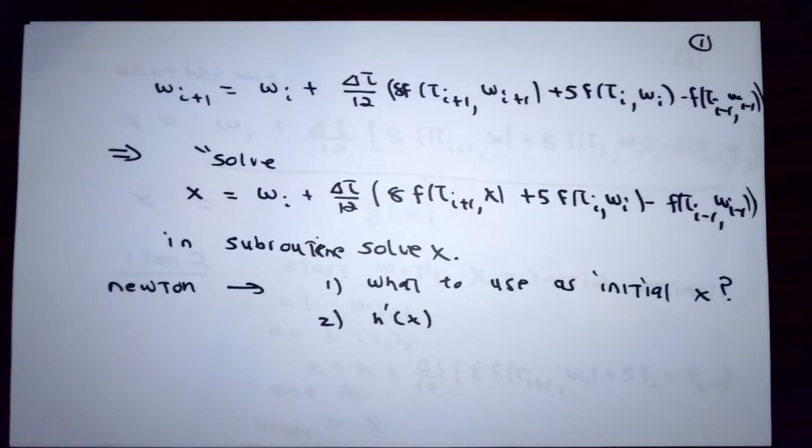Recently we developed a method for solving initial value problems that was based on interpolating f of t and y at three places. One of them was the most recent time value at which we know the solution or at least an estimate of it, the time value before that, and strangely the time value at which we want to know the value of the solution.